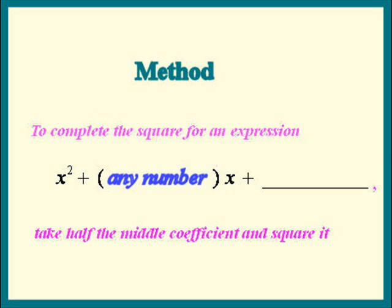Keep in mind though, this method only works when the coefficient of x squared is 1. What if it's not 1? There won't be a problem because we could always factor out that coefficient. We'll see later how this is done. But first, let's look at some pretty simple examples where the x squared coefficient is 1.